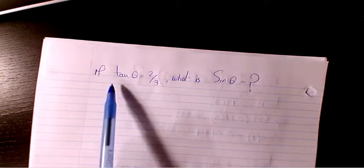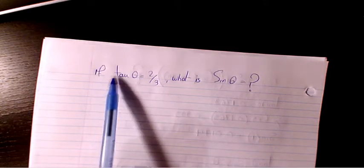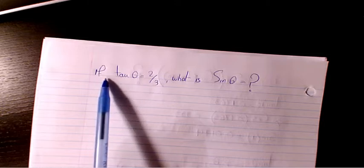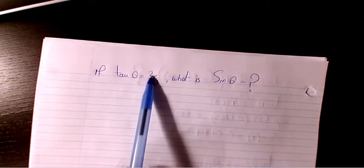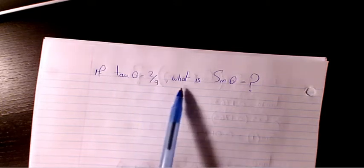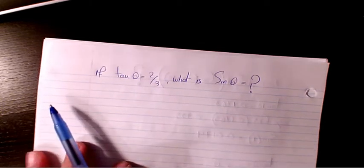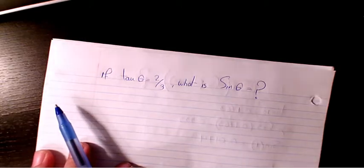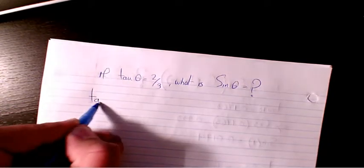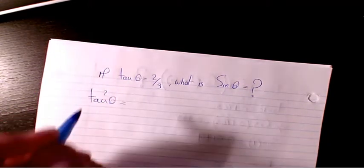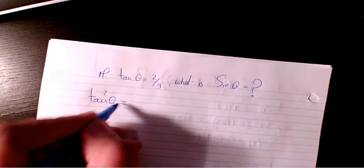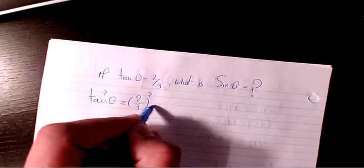In this video I want to solve this equation. The question says that if tan theta is equal to 2 over 3, what is the value of sine theta? So what I can do is find the square of this: it will be 2 over 3 squared, which will be 4 over 9.